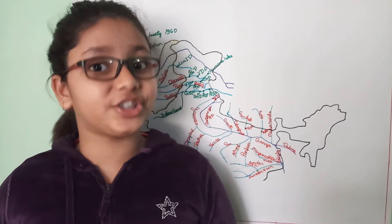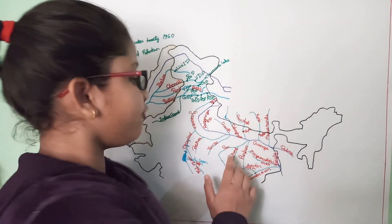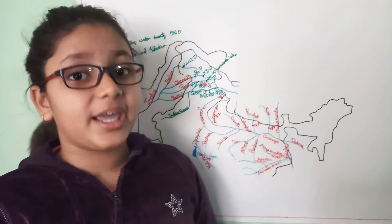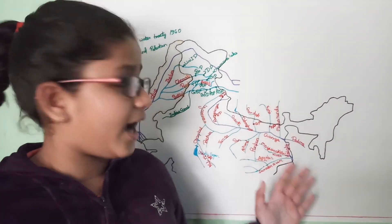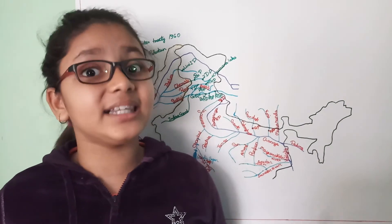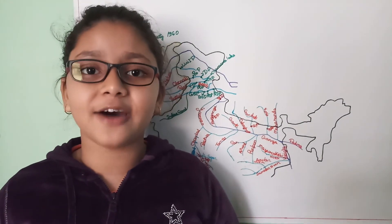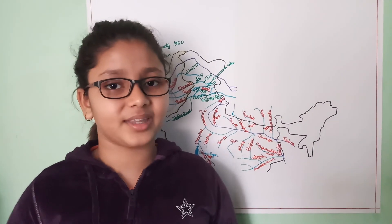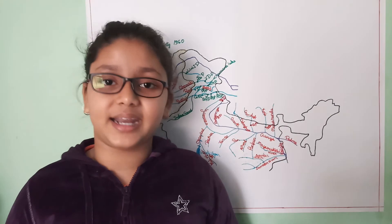Then comes the Kosi project, which is constructed on the Kosi river. It is a joint project of Bihar and Nepal, and its main objectives are flood control and irrigation. The main canal in Bihar is drawn out from the Hanuman Sagar Barrage, and Kataiya in Nepal produces the hydroelectricity.